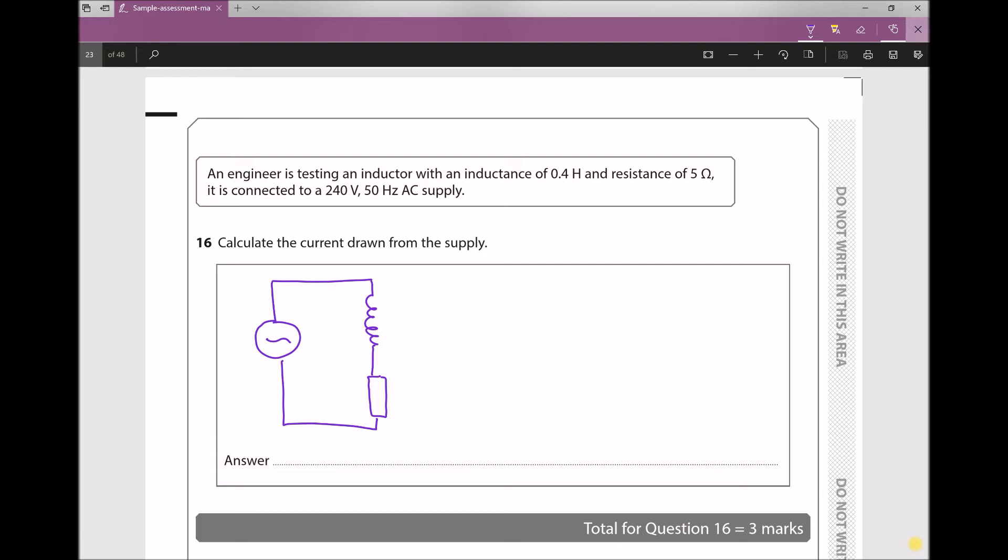Question 16 states: An engineer is testing an inductor with an inductance of 0.4 henrys and a resistance of 5 ohms. It is connected to a 240 volt, 50 hertz AC supply. The question asks us to calculate the current drawn from the supply.